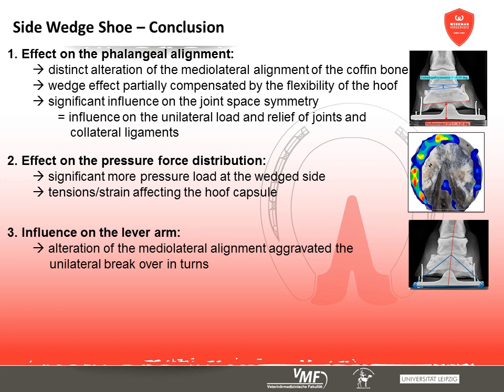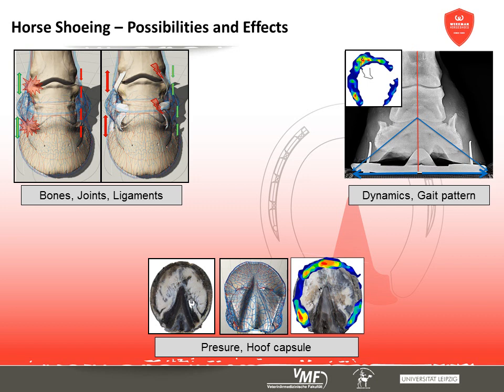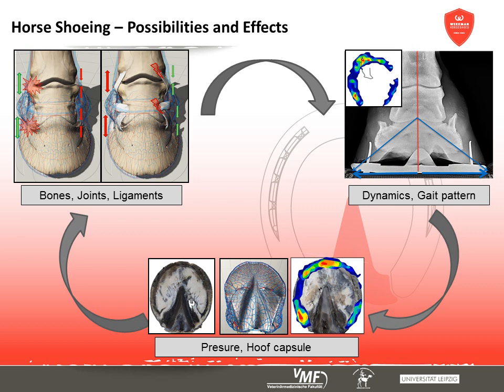Furthermore, it is not always possible to predict the changes in the individual footing pattern. A most accurate evaluation of the horse prior to shoeing, as well as trials for the exact position and height of the modification, are helpful. When using a shoe modification like this, the effects on tendons, ligaments, bones, and cartilage are usually at the centre of attention, while the impact on the surrounding hoof capsule often takes a back seat. By changing the pressure distribution and the supporting surface, we influence the sensitive blood circulation and the horn architecture significantly, and additional tension within the horn architecture can provoke the appearance of horn cracks.